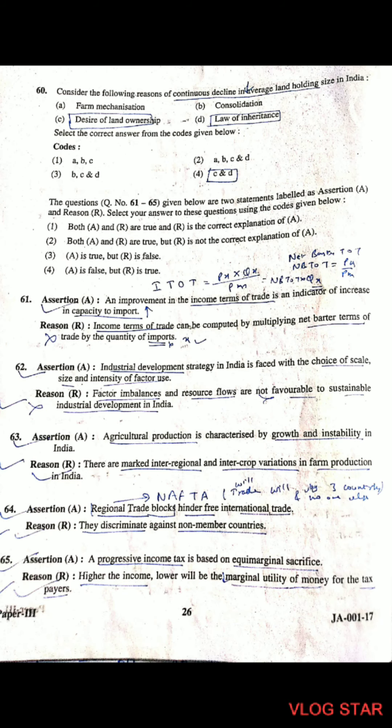Question 60: Which are the correct reasons for continuous decline in average land holding size in India? The correct reasons are C and D — desire for land ownership and the law of inheritance.